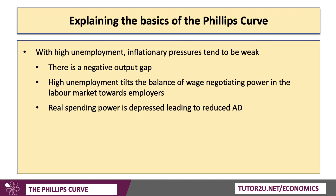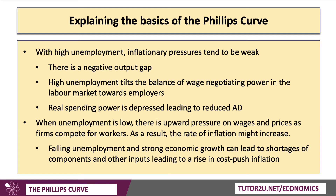When unemployment is high, the real spending power of households is depressed, leading to a fall in consumption, which is the biggest part of aggregate demand. But when unemployment is low, there is upward pressure on wages and prices. Firms are competing for workers and have to raise wages both to recruit and retain them. As a result, inflation may increase. Falling unemployment and strong growth can lead to shortages of components and other inputs, leading to cost-push inflation.